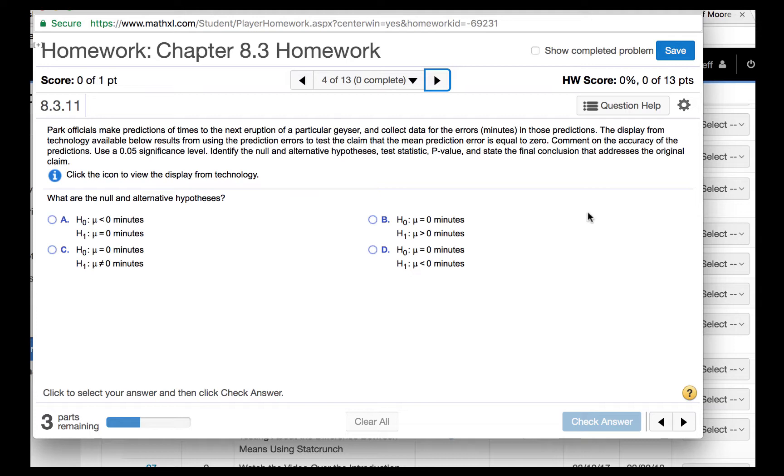So we are first to find the null and alternative hypotheses. We know that the null hypothesis always contains zero, so we can eliminate A. The claim is that the mean prediction error is equal to zero. Anything greater than zero or less than zero would not be equal to zero. So our alternative hypothesis should be that the mean is not equal to zero. So we will select C.